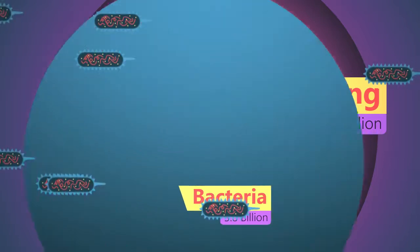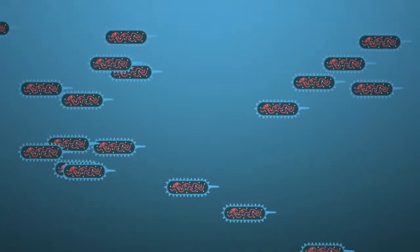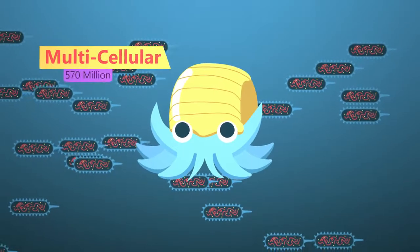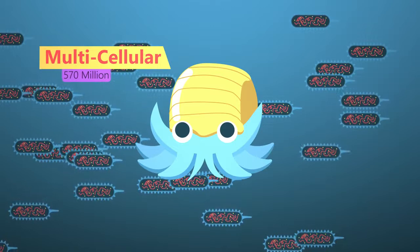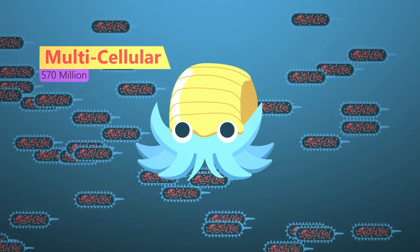These were single-celled prokaryotic cells such as bacteria. Multicellular life only evolved over one billion years later, and it's only in the last 570 million years that life forms we are familiar with started to evolve.